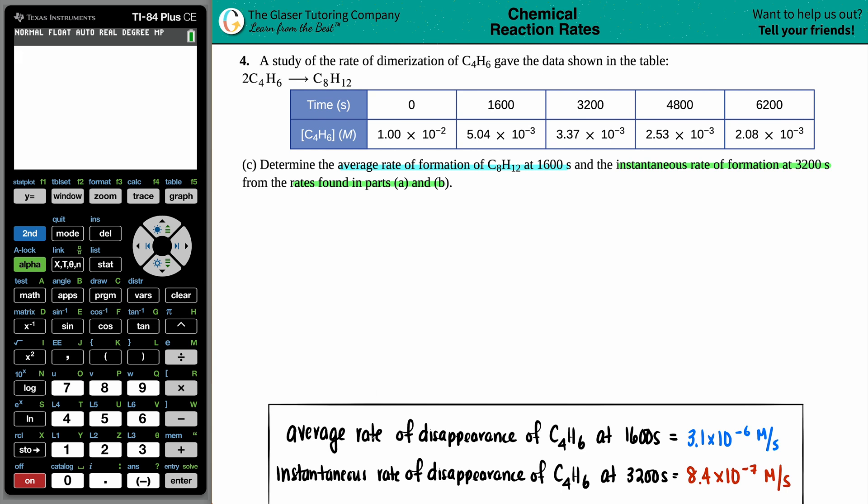We found in part A that the average rate of disappearance of the C4H6 at 1600 seconds is 3.1 times 10 to the negative 6 molarity per second, and the instantaneous rate of disappearance of the C4H6 at 3200 seconds is roughly around 8.4 times 10 to the negative seventh molarity per second. From this information we need to find now the average rate of formation of C8H12.